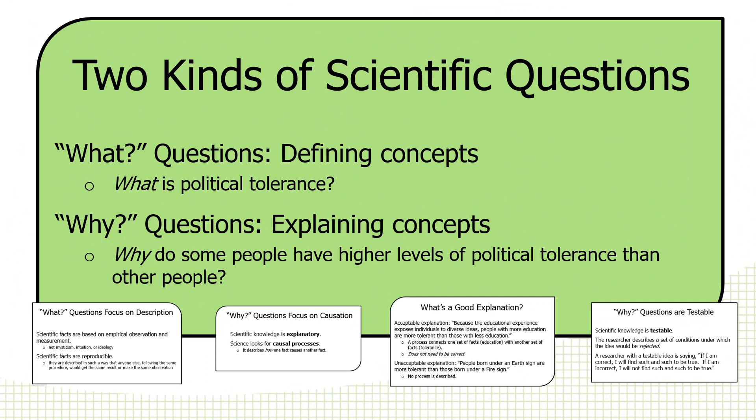What is political tolerance? If we can define it conceptually, we also must measure it empirically. Why questions, in a lot of ways, are more fun, because we get to construct explanations for why some people are more tolerant than other people after we've measured it correctly. Then we can develop explanations: why do some people have higher levels of political tolerance than do other people? We can answer such questions if we're clear about our measurements.